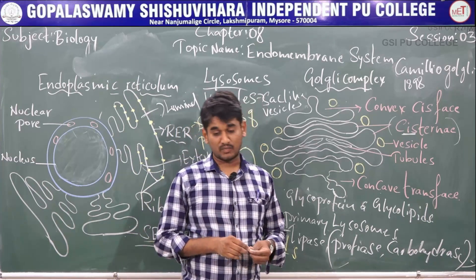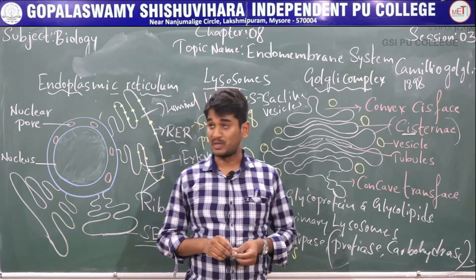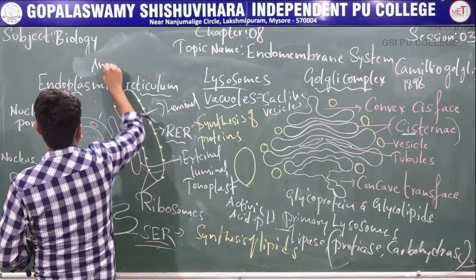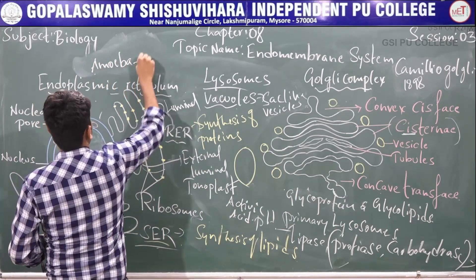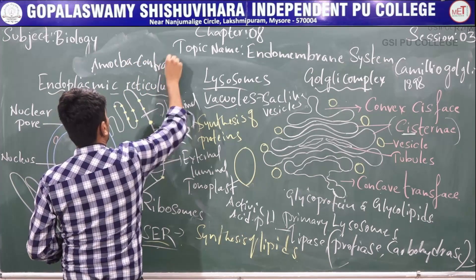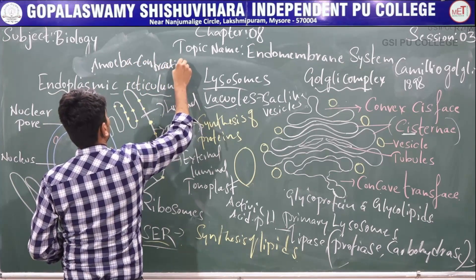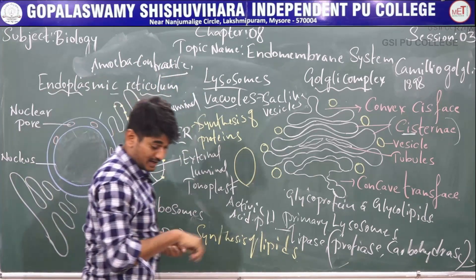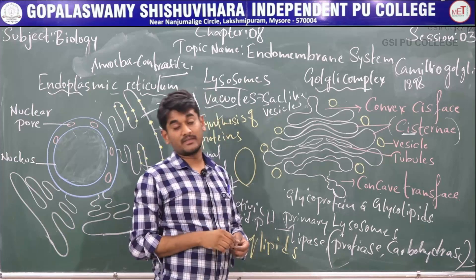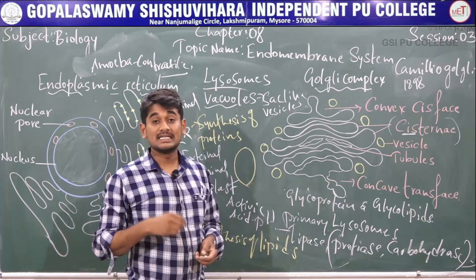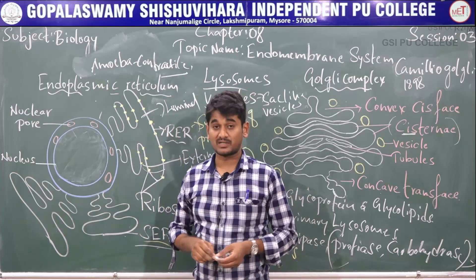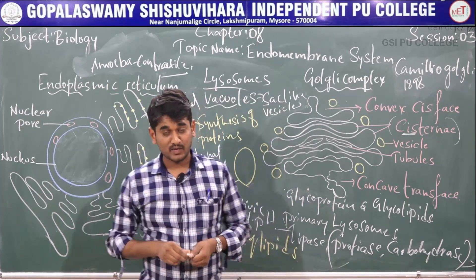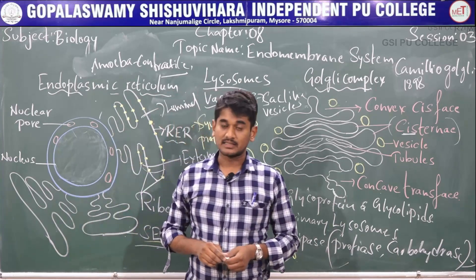Vacuoles are very important for many organisms. For example, in Amoeba, there is a contractile vacuole which helps to maintain osmoregulation and excretion. And in many cells, such as in protists, there is a food vacuole. This food vacuole is formed by the engulfing of food particles.